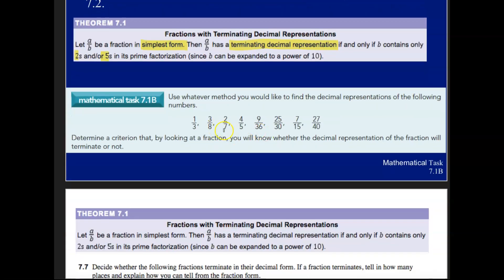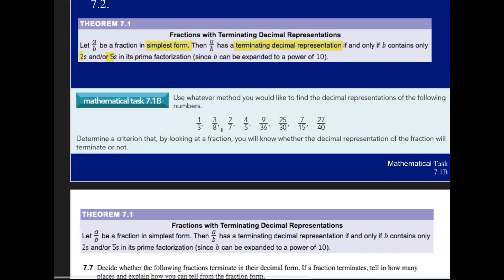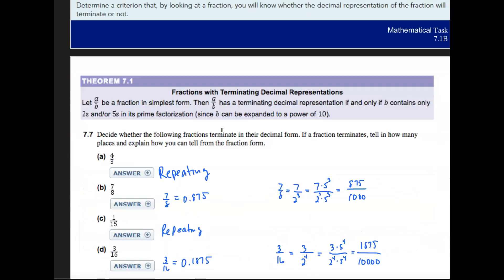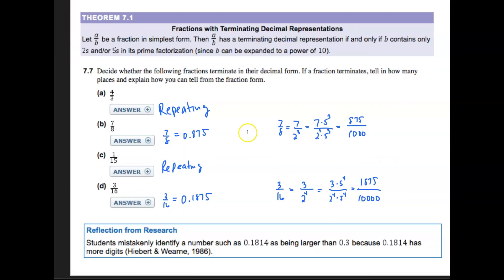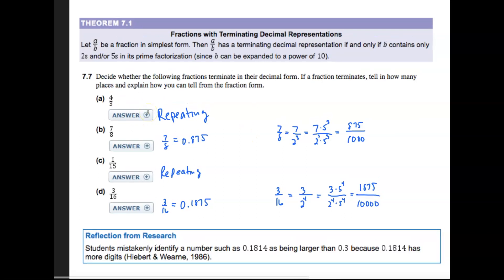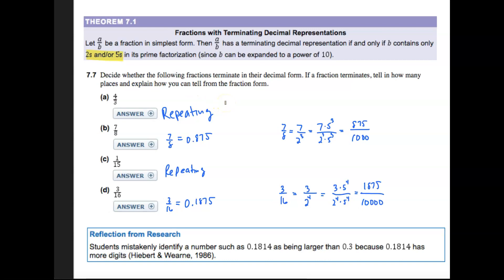You could quickly look at these and say which ones are terminating. To look at a set of examples here real quick, 4 over 3 would be what we call a repeating because notice the denominator has a 3. It needs to have twos and or fives in that denominator in b. And it has a 3, so it's going to be repeating.